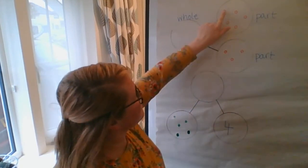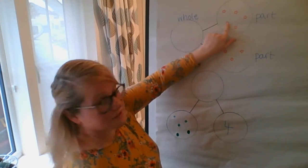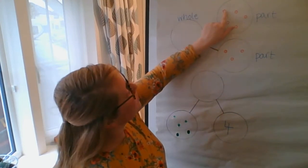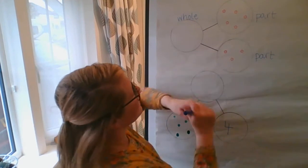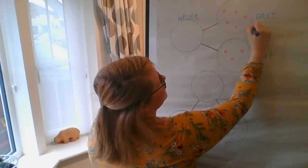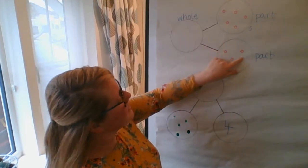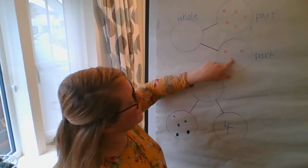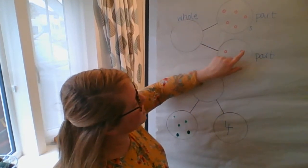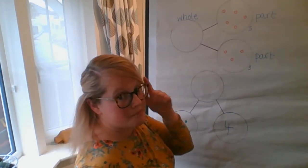So if we count how many flowers are in this part, can you count with me? One, two, three, four, five. I can just put a little number five next to it to remind me. And then here, I have a part here, so I have three. One, two, three. I'm just going to put that there to help me remember.